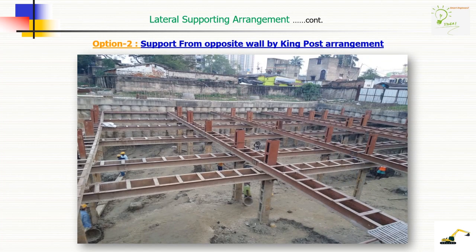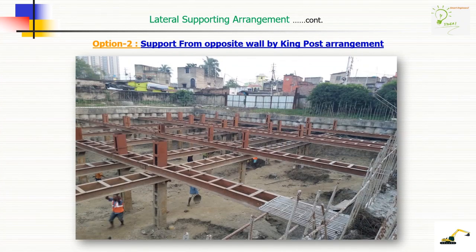There is another option for lateral supporting arrangement — that is called the king post arrangement. You can see that supports have been provided from the opposite wall by king post arrangement. Here is another view of the same king post arrangement.